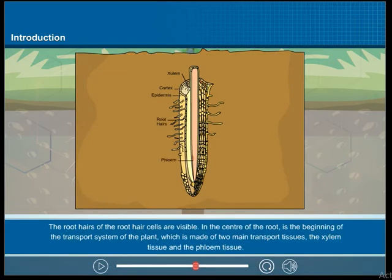The root hairs of the root hair cells are visible. In the center of the root is the beginning of the transport system of the plant, which is made of two main transport tissues: the xylem tissue and the phloem tissue.